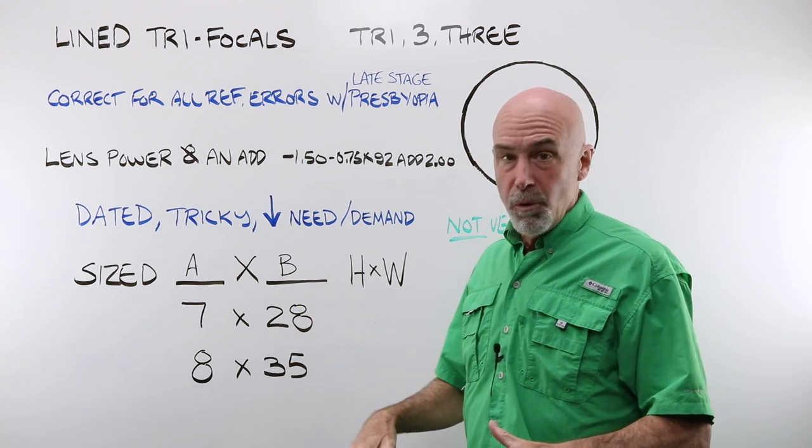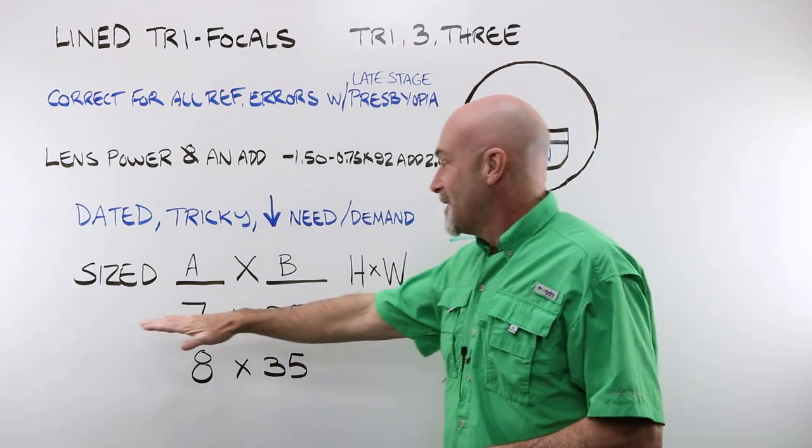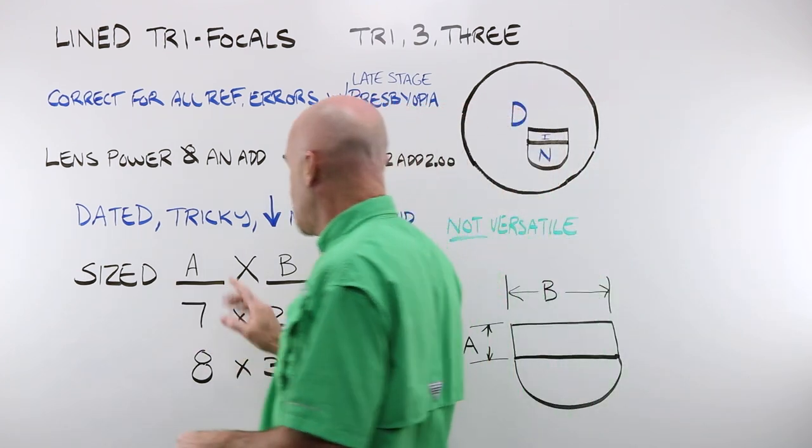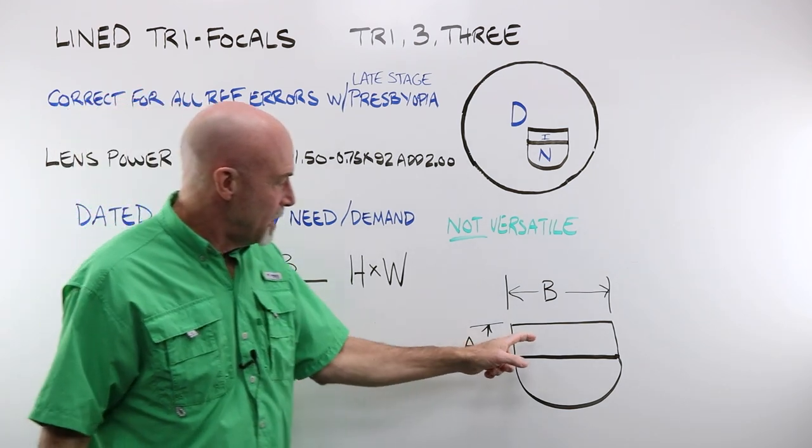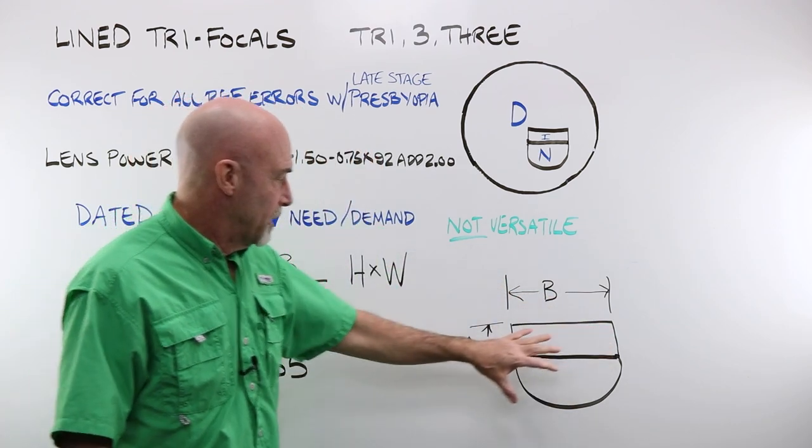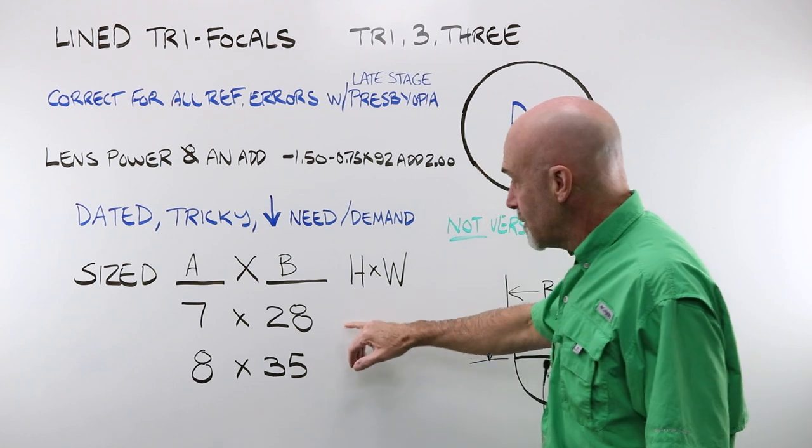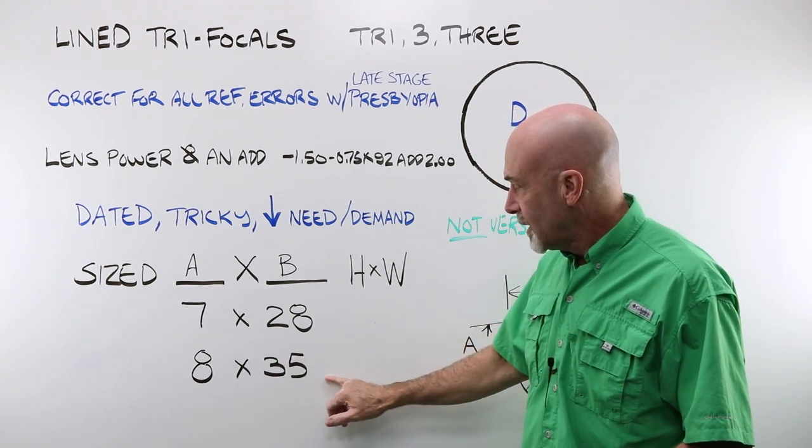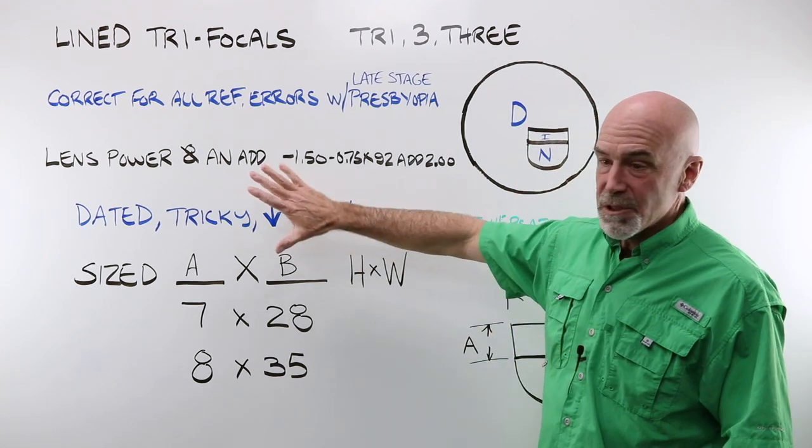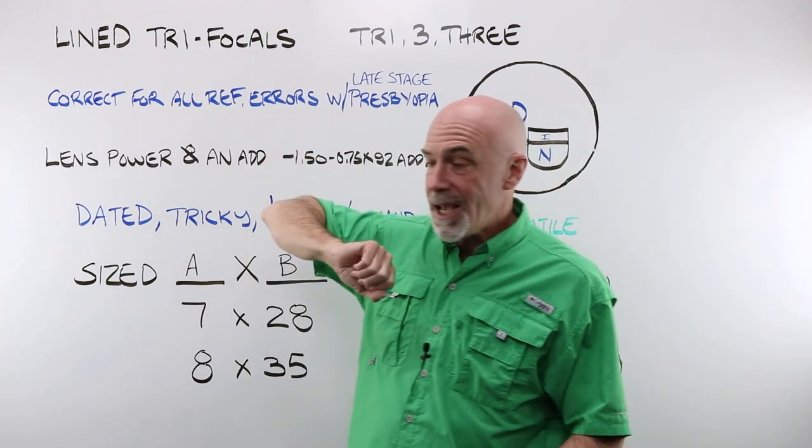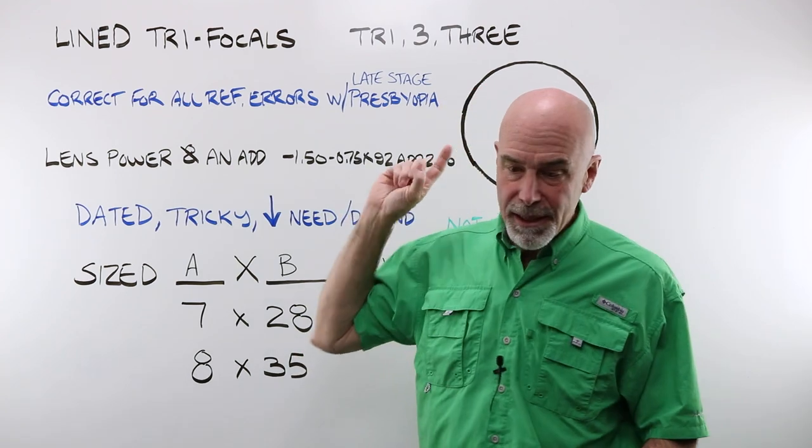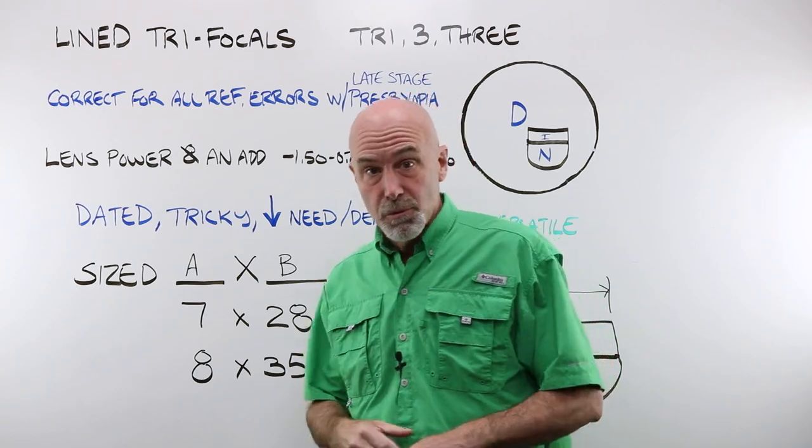If you ever need to order a trifocal or need to answer a question on a test, they are sized accordingly to A by B. A being the height of the intermediate zone and B the width of the segment itself. There are two general sizes. You have a 7 by 28 and an 8 by 35. Just something you need to know about. You, if you are starting out literally today as an optician, you may in fact never ever see one. But if you do, layout and how to measure for one is all covered on the OpticianWorks website.